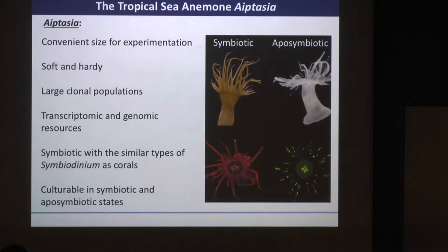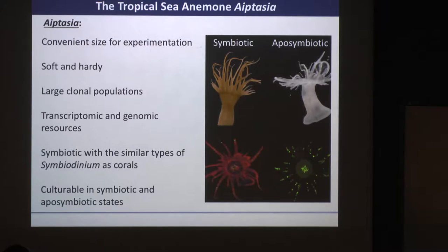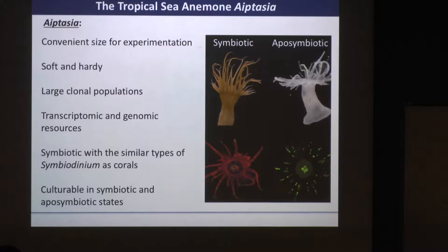We've also generated a lot of transcriptomic and now genomic resources — the genome was published just last year — so we have a wealth of sequencing data to understand the genes we're looking at. There's a lot of emphasis right now on getting CRISPR and other genome engineering strategies to work. Another great feature is that these guys are symbiotic with the same types of symbiodinium as we see in coral, so we can take symbiodinium from coral, infect them into Aptasia, get stable symbioses, and ask the same kind of partnership interaction questions.